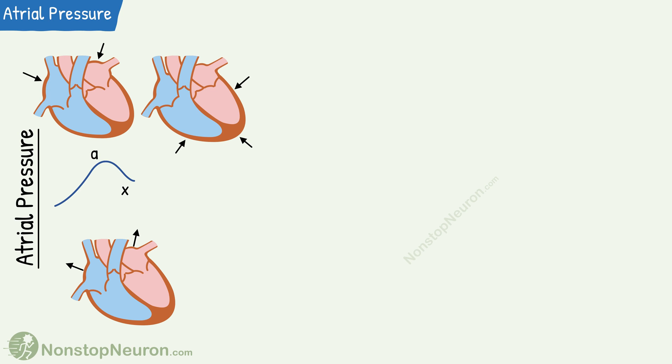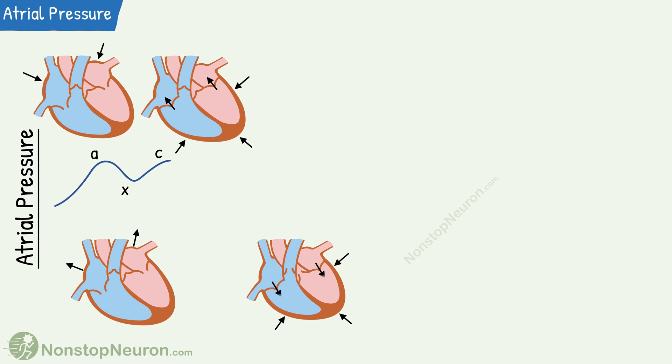Then comes the isovolumetric contraction of ventricles. At this point, backflow of blood and bulging of atrioventricular valves produces a rise in pressure. This is referred to as the C wave. Then during ejection, ventricular musculature pulls atrioventricular valves towards the ventricles, producing a fall in atrial pressure. This wave is referred to as the X1 wave.